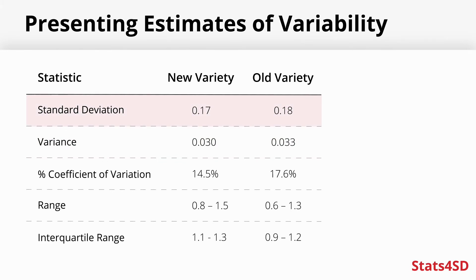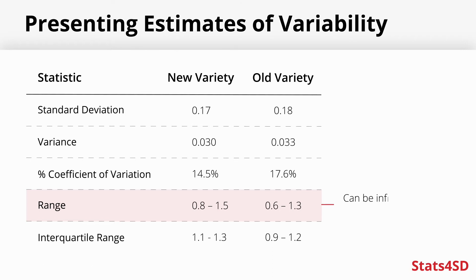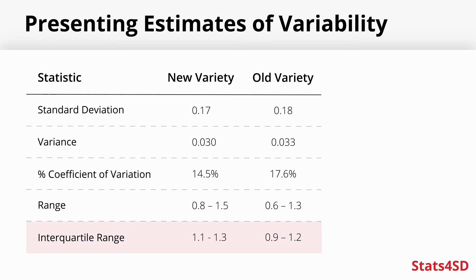One way of thinking about standard deviation is to multiply it by two, and then add and subtract it from the mean to give a range where we think 95% of our data might lie. But that's a little fiddly and only valid if we have a symmetrical distribution. Other options include the coefficient of variation — the ratio of standard deviation to the mean — or the range of values, though the range can be influenced by one or two outliers. The interquartile range, from the 25th to 75th percentile, is another option. This is why graphs are a much better way of summarizing variability than numbers.